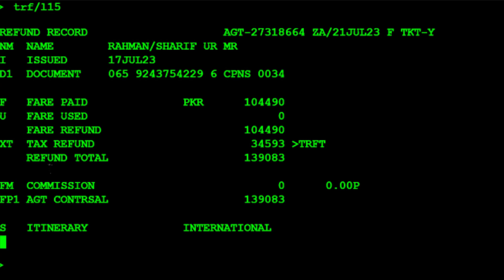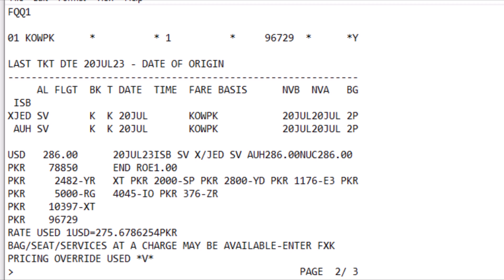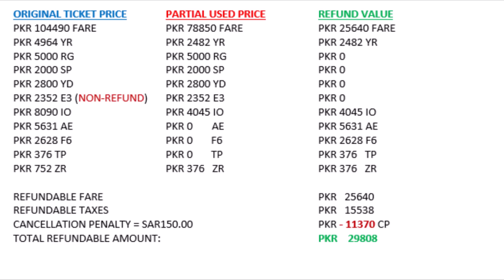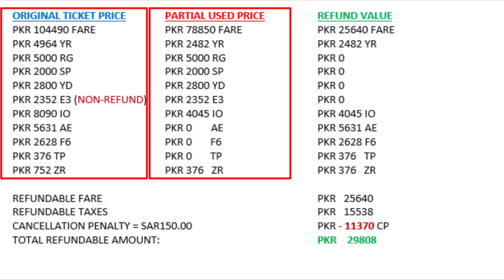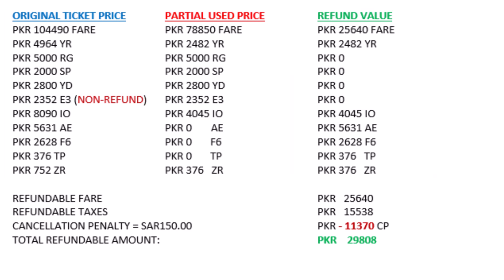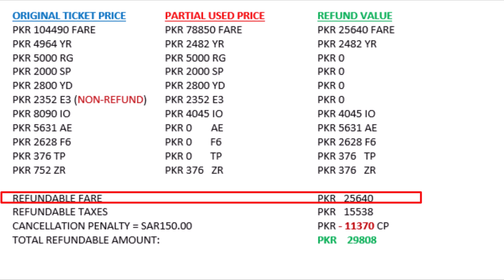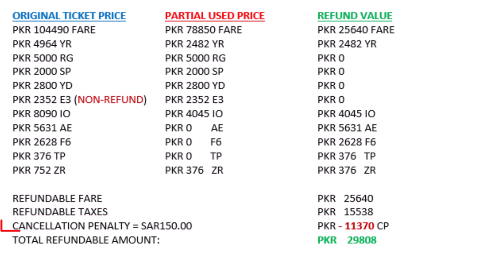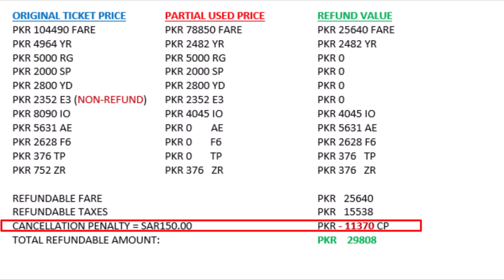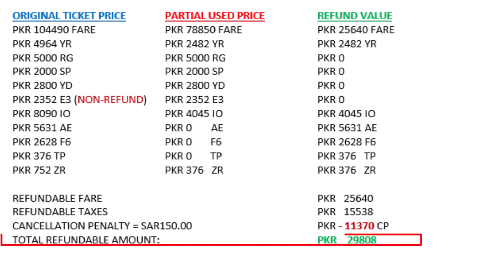From here onwards, the steps are the same whether you use the ticket number or an active PNR to update the refund record and process the refund. It's recommended to calculate the refund amount before initiating the refund process. Here is the Refund Calculation Sample Sheet. The first column is the original ticket price, the second column is the partial used price, and the third column is the refund value. The refundable base fare is 25,640 Pakistani rupees, the refundable taxes amount is 15,538 Pakistani rupees, the cancellation penalty fee amount is 11,370 Pakistani rupees, and the total refundable amount is 29,808 Pakistani rupees.